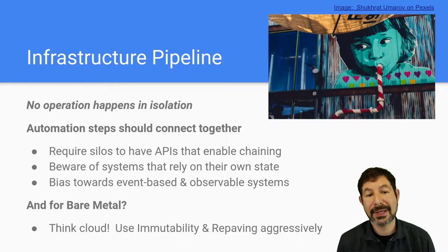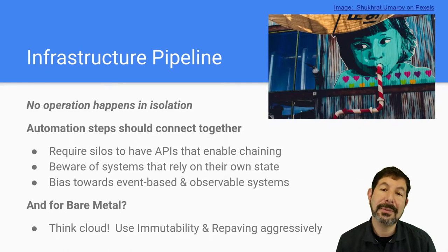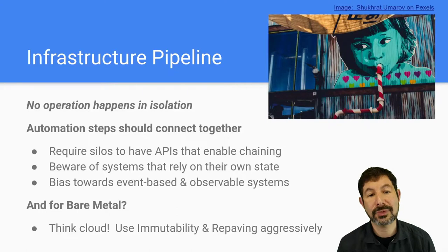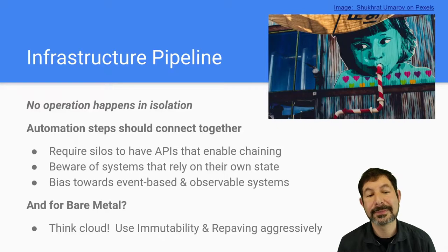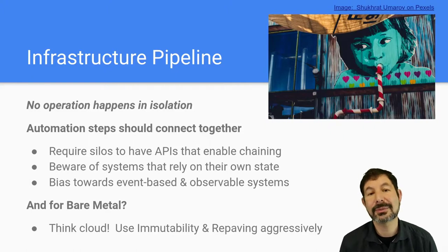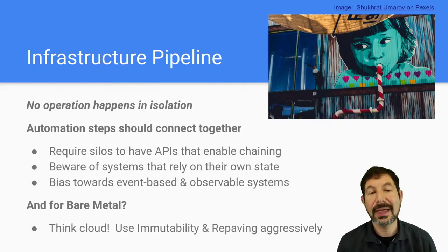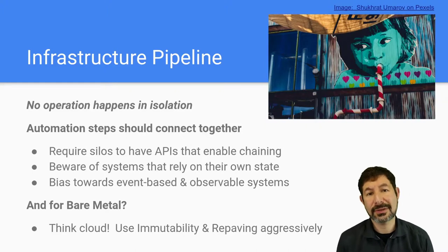You want to bias towards event-based and observable systems. The nice thing about event-based systems is that they will tell you when things change, so you can subscribe to updates and listen for those updates — you don't have to be constantly polling or figuring out if you missed some drift. And for bare metal, think cloud: use the immutability and repaving topics we've already covered aggressively. When you do that, a lot of the pipeline operations are much simpler, because instead of trying to figure out how to fix a system, you're just resetting it.